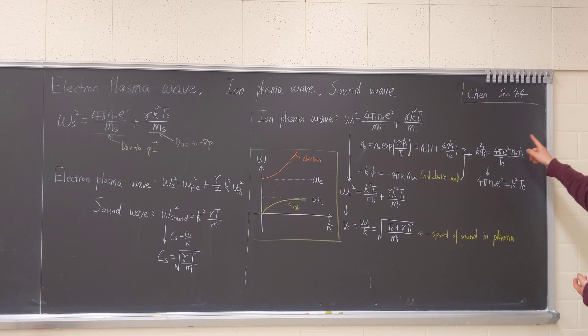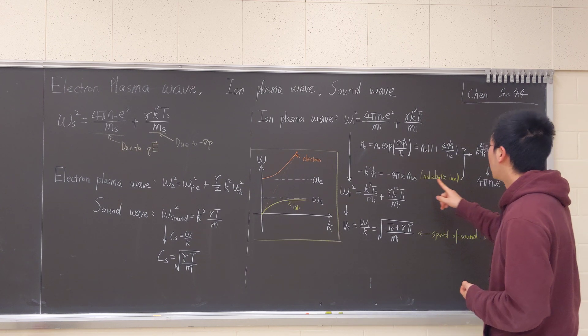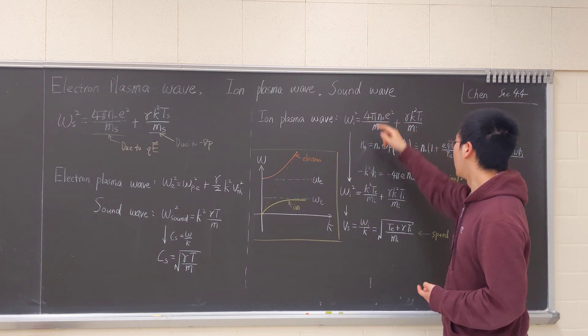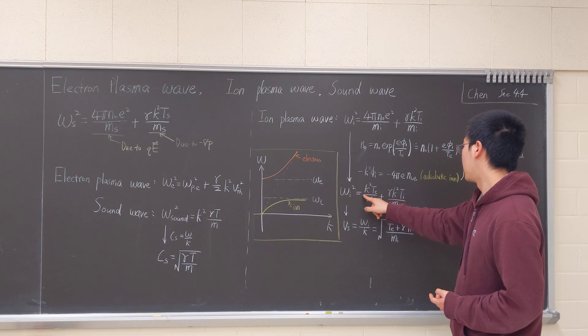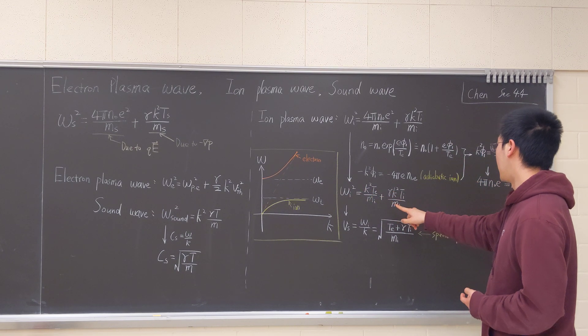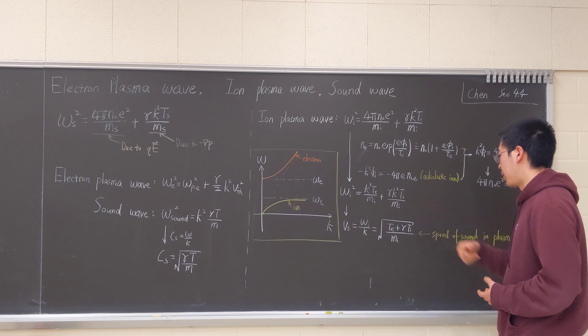Then we will have this expression, and we will want to have 4 pi N-0 E-squared equals K-squared T-E. So we substitute this into here. Then we will have this expression: Omega I-squared equals K-squared T-E over M-I plus gamma K-squared T-I over M-I.